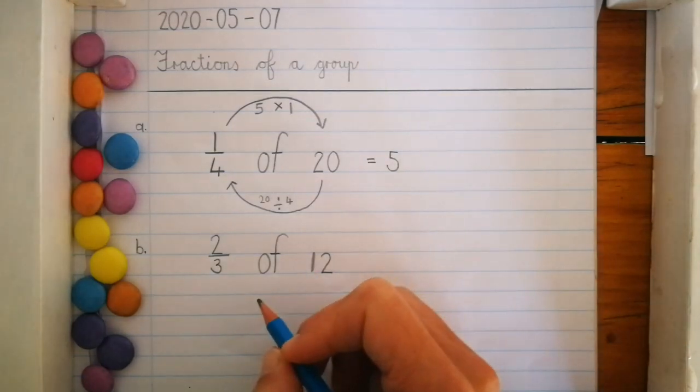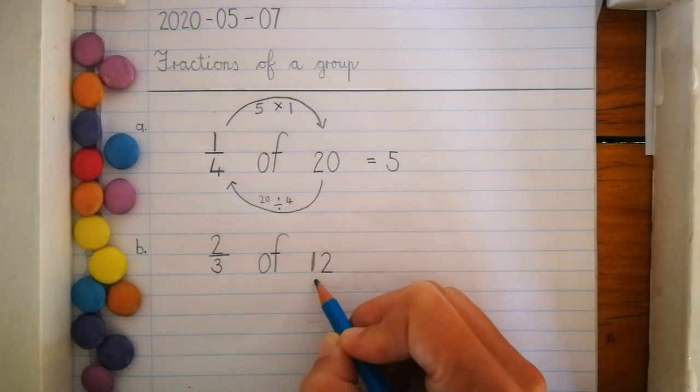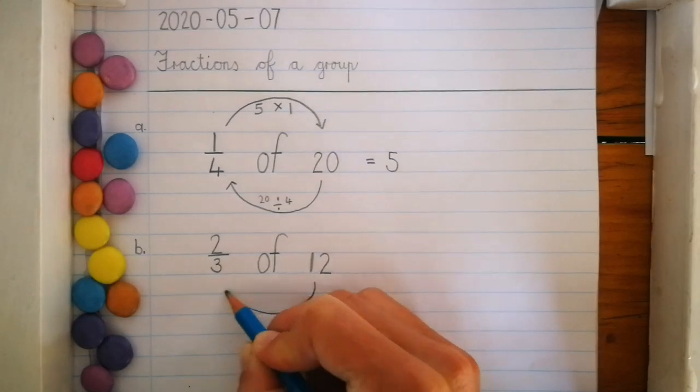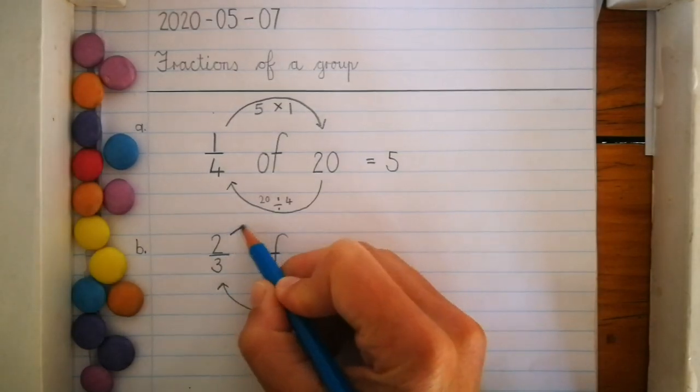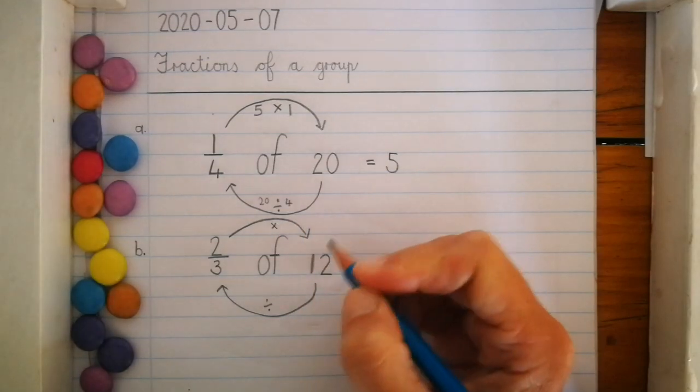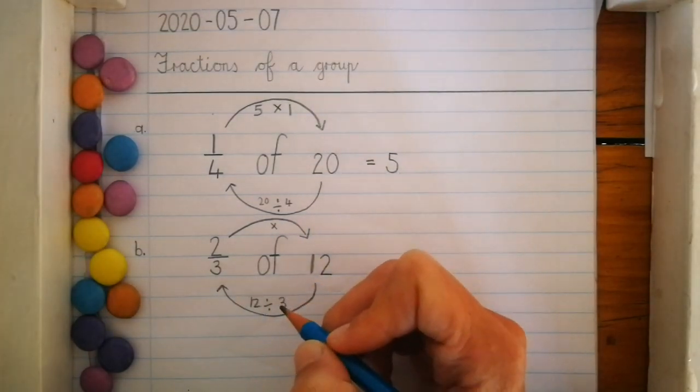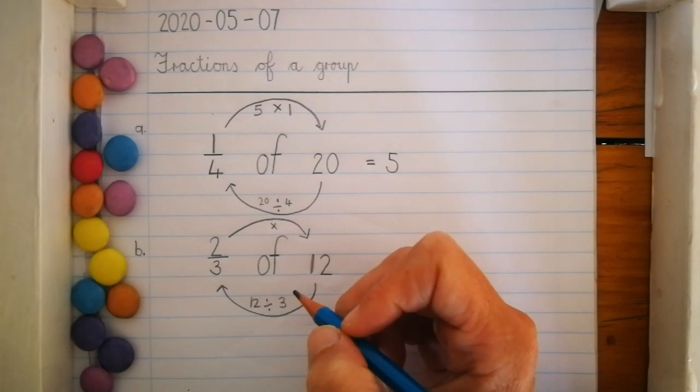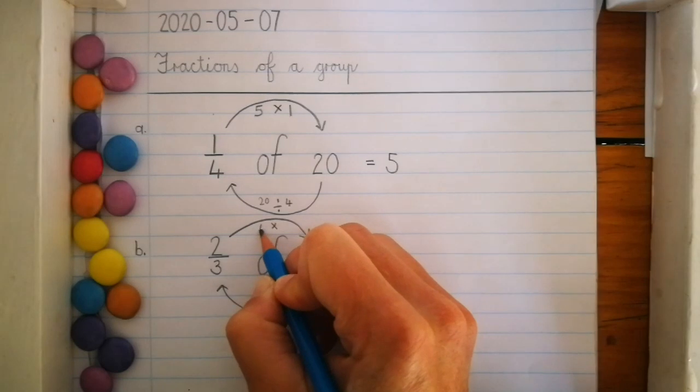Now let's do something a little bit more challenging: 2 thirds of 12. I take my smile and my rainbow. 12 divided by 3. You count in 3s to work it out: 3, 6, 9, 12. The answer is 4. Put the answer at the top.